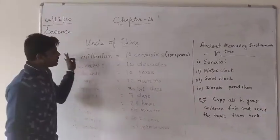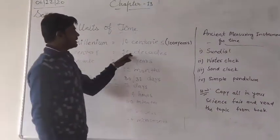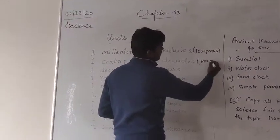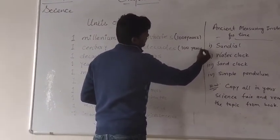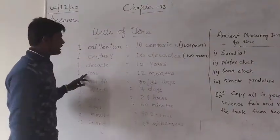One century is equal to 100 years, one century equals 10 decades, that is equal to 100 years. One decade is equal to 10 years, one year.